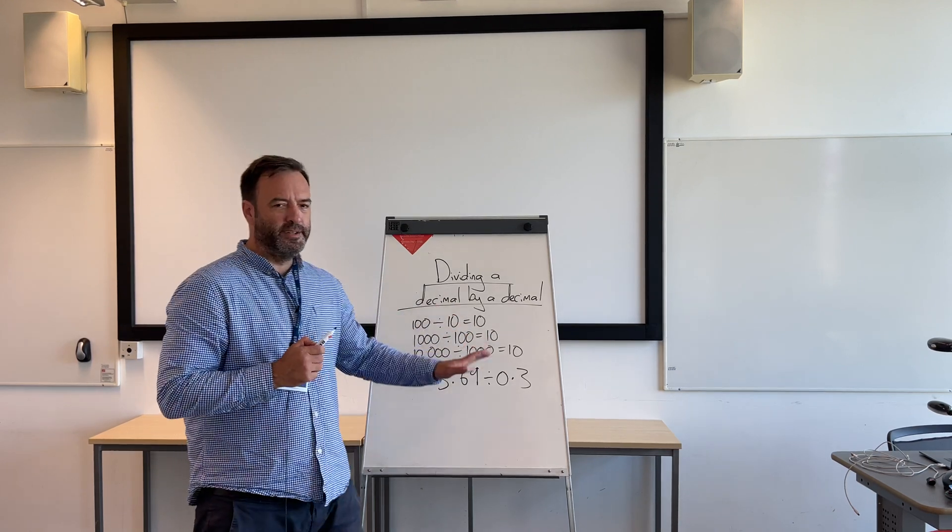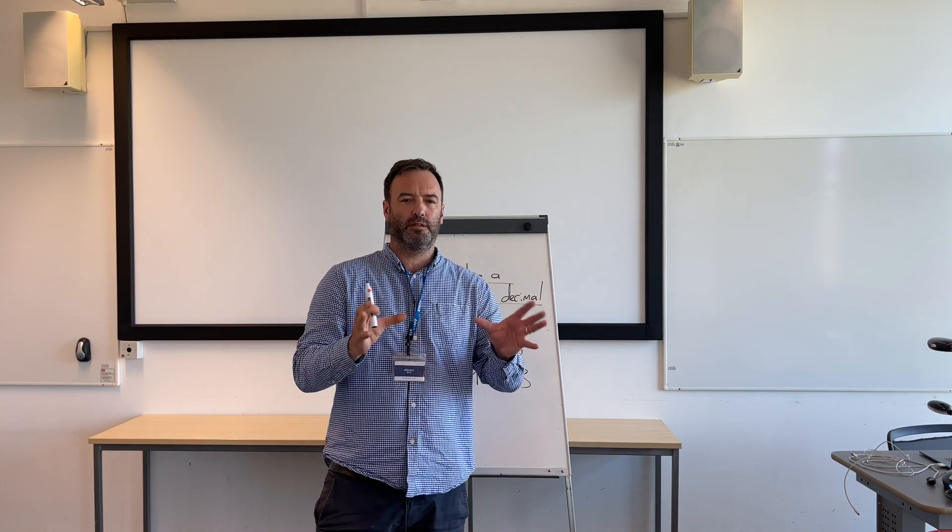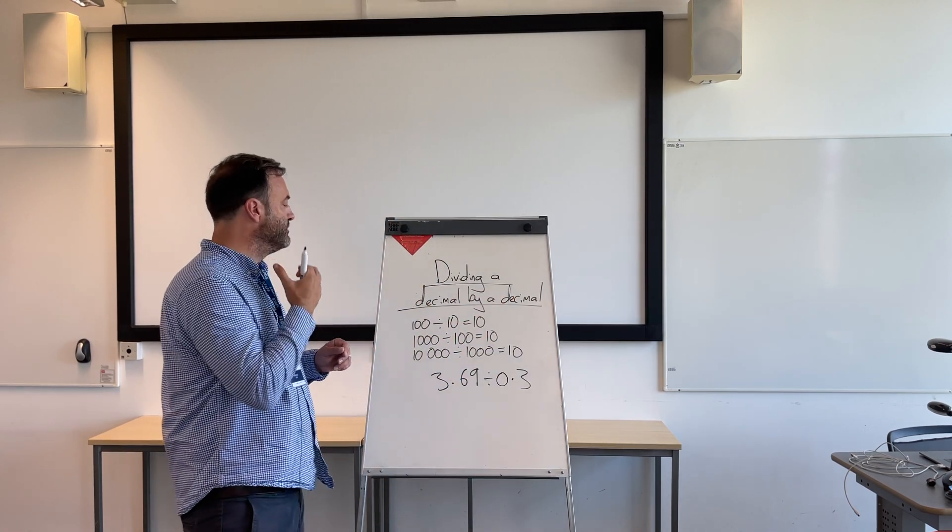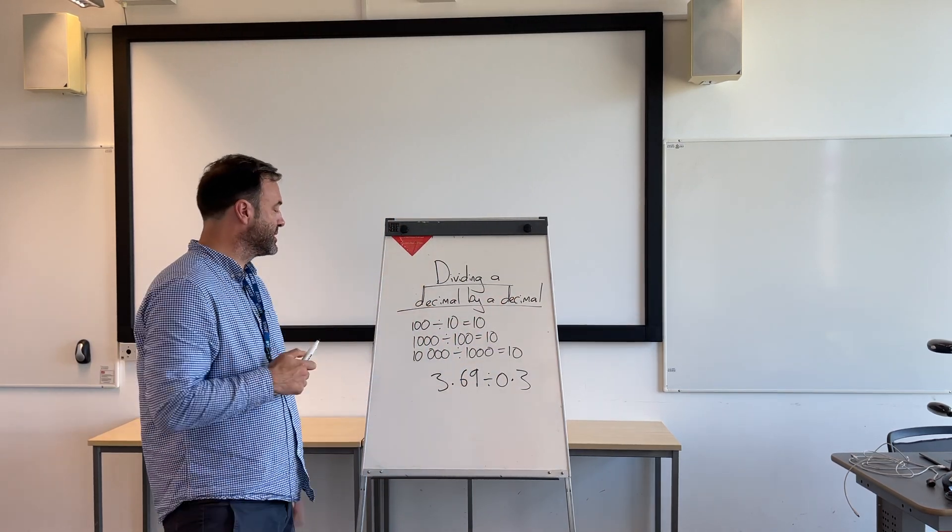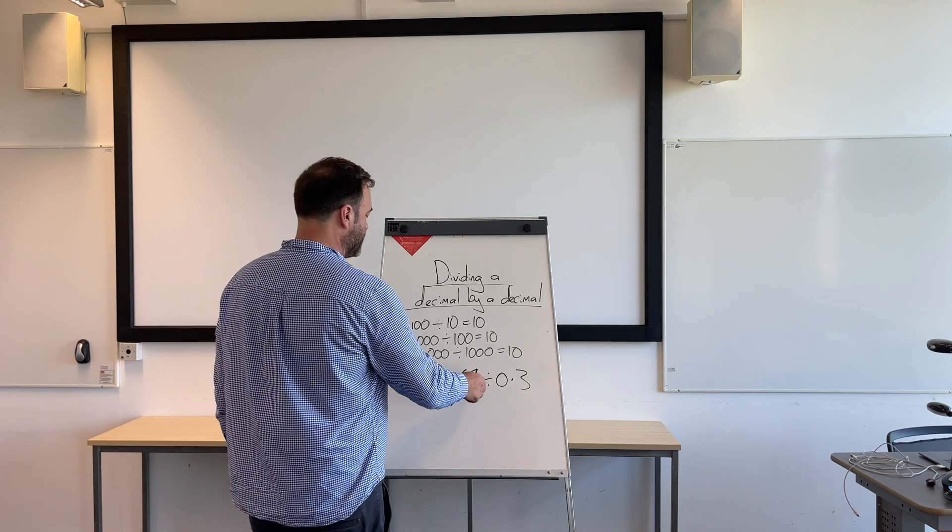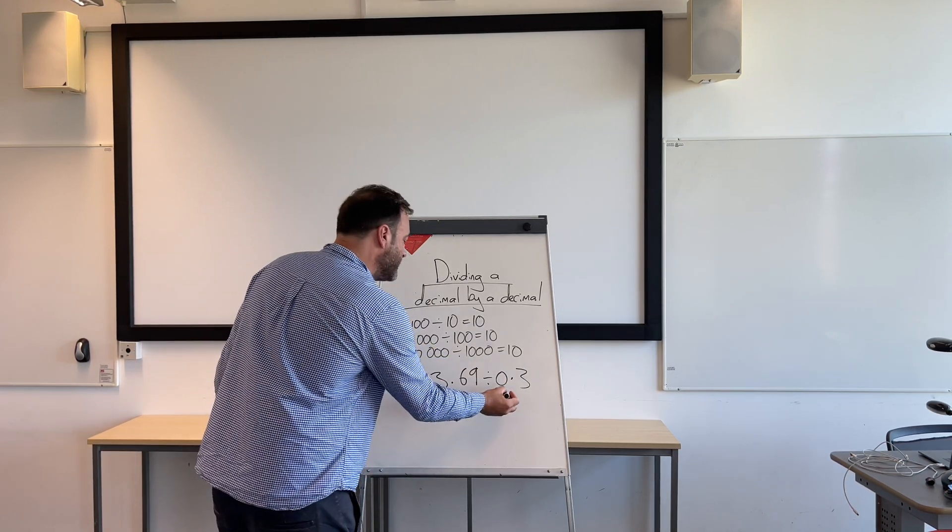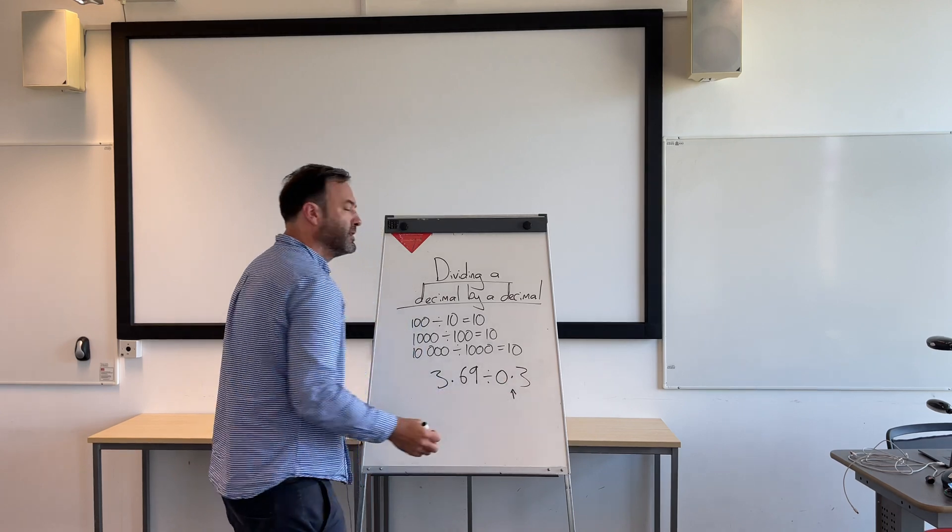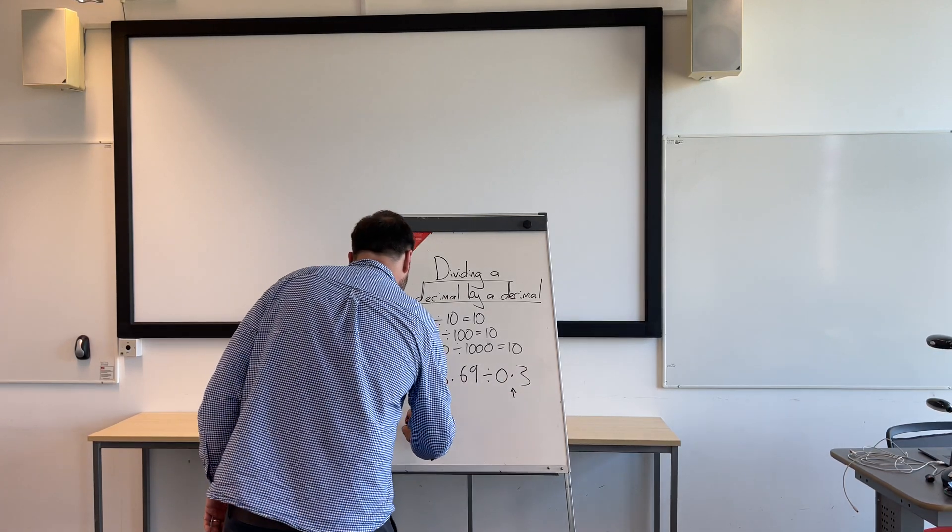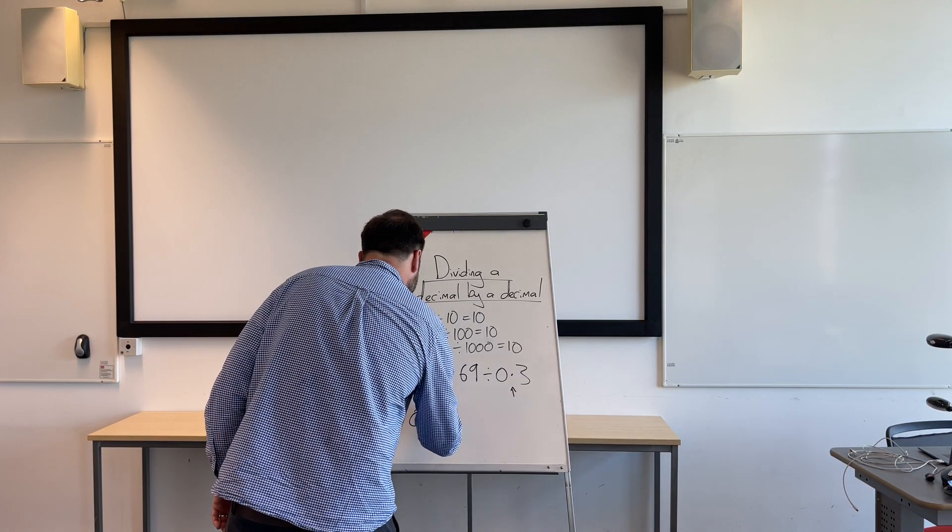The idea about division is you get a proportionate answer, and that's really important to remember, because it's going to help us with this. So, at the moment we've got 3.69 divided by 0.3. The number on the right always goes out in the cold outside the bus stop. We can see that this is going to be a problem.